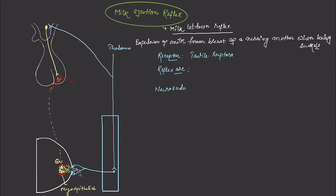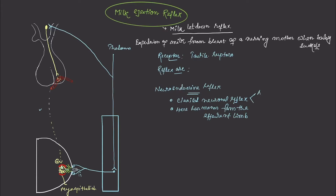This reflex is also known as a neuroendocrine reflex. In a classical neuronal reflex, both the afferent and efferent limbs are formed by neurons. However, in this reflex, the efferent limb is formed by a hormone — oxytocin. Because the hormone forms the efferent limb, it is called a neuroendocrine reflex.